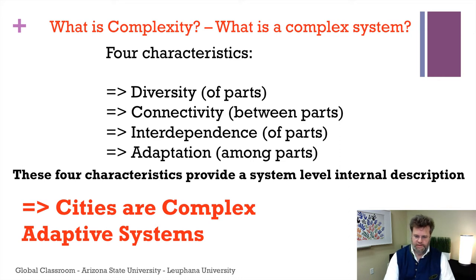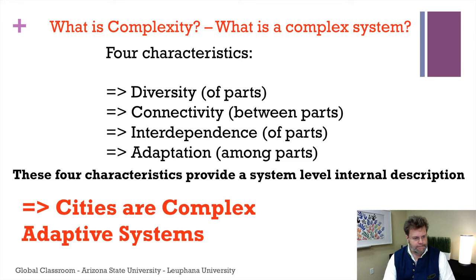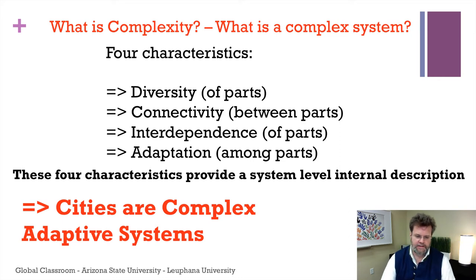For natural systems, adaptation is a consequence of evolutionary processes. For technologically or designed systems, we try to do it ourselves, and generally we are not very good at it — as we will see when we look at cities. Those four characteristics — diversity, connectivity, interdependence, and adaptation — provide a system-level internal description of the system, and it should be clear that cities are a prime example of a complex adaptive system.